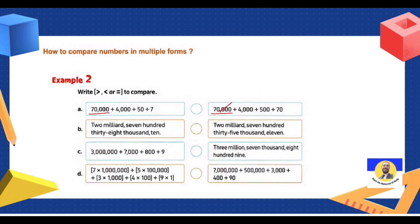For example, the first number has 70,000 and here it's 70,000 — the same. Next, 4,000 and here 4,000 — the same. But here it's 50 and here it's 500. So which is the greatest — 50 or 500? Bravo! 500 is the greatest.